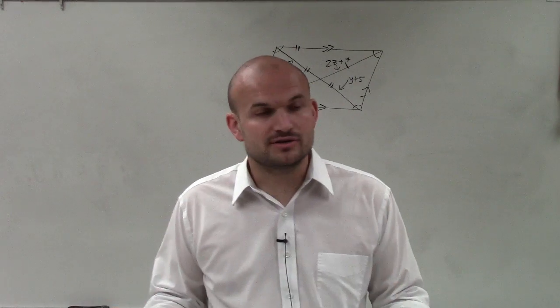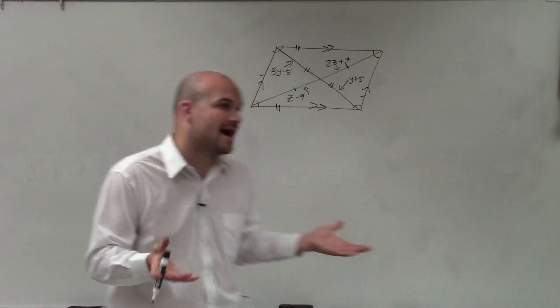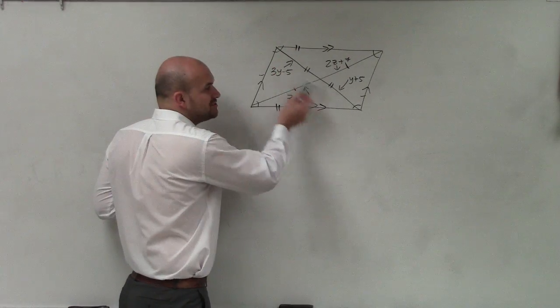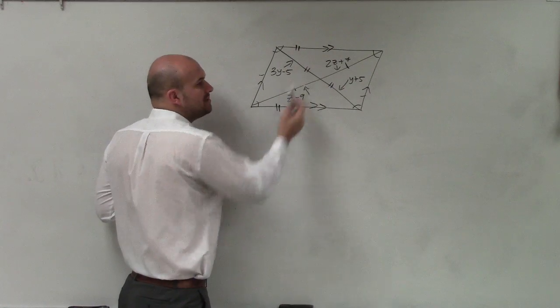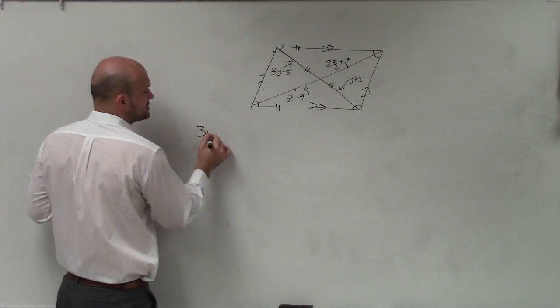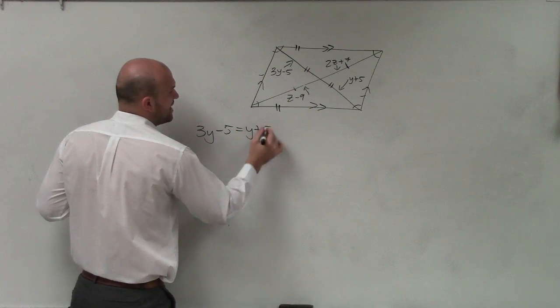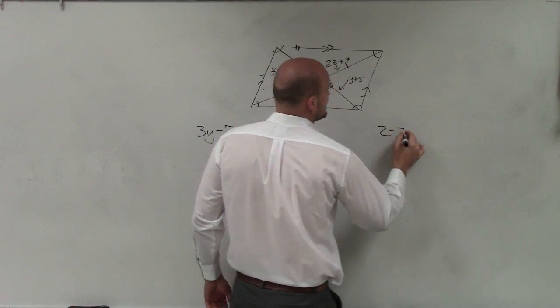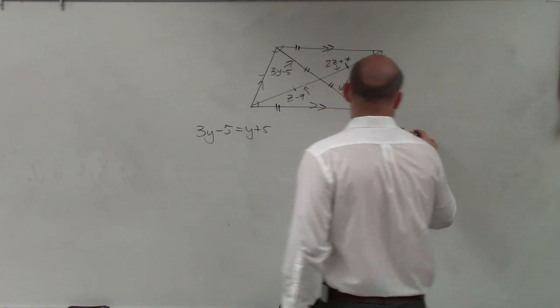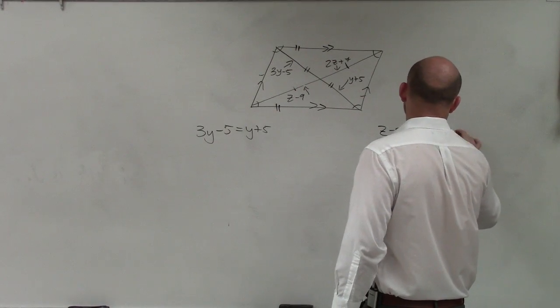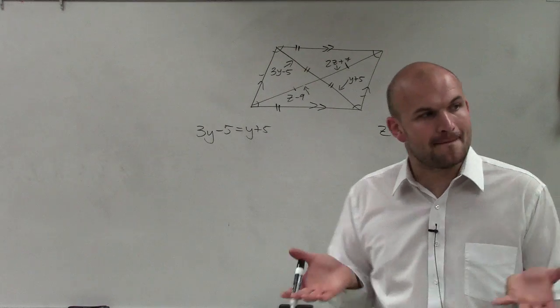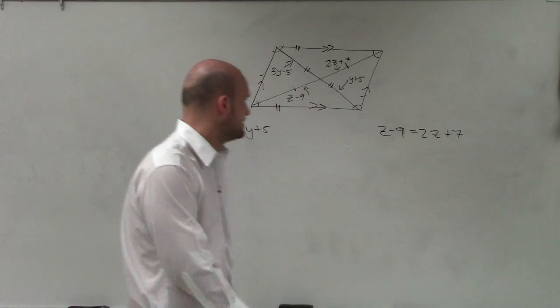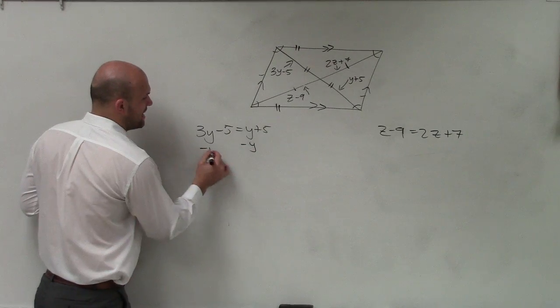So those are all the characteristics. So now what we have is we have two sides of diagonals. We have this side and this side. Well, since I know they have been bisected, I can set up two equations. 3y minus 5 equals y plus 5. And z minus 9 equals 2z plus 7. So it's very important that you guys understand that the diagonals have been bisected. So now we just go ahead and solve. Just do a little math.